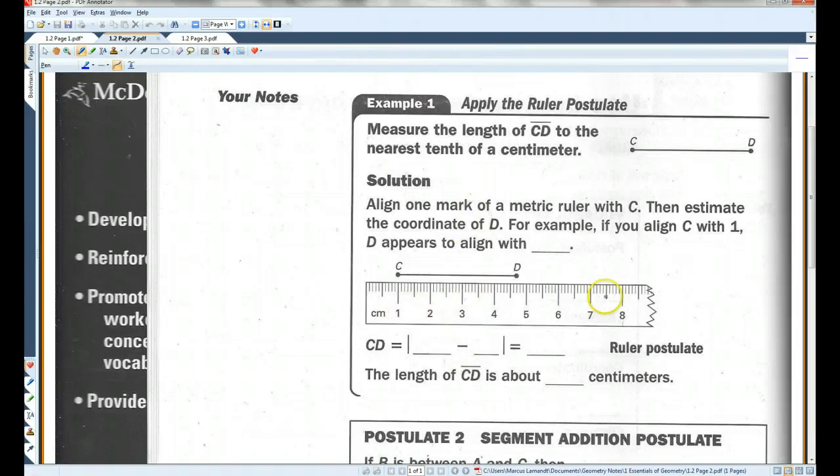So they already gave us the ruler. Align one mark of the metric ruler with C, then estimate the coordinate of D. For example, if you align C with 1, D appears to align with, looks like 4.7.